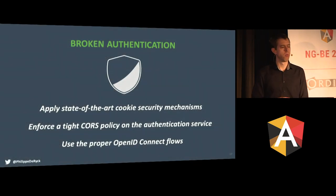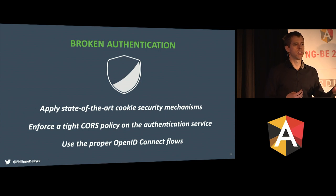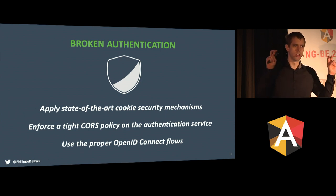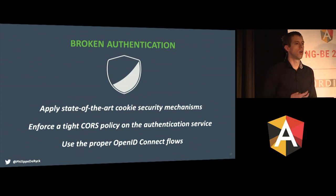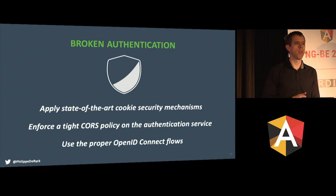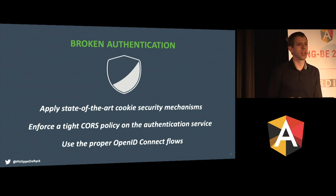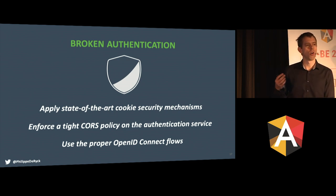This brings us to the second OWASP point: Broken Authentication. For OWASP, authentication covers both the authentication procedure — submitting credentials — and keeping track of authentication state using session management. If you're using cookies, apply state-of-the-art cookie security mechanisms, including the newer prefixes. Enforce a tight CORS policy — only allow legitimate contexts to get access to those tokens. And if you're using OpenID Connect or OAuth, use the proper flow.